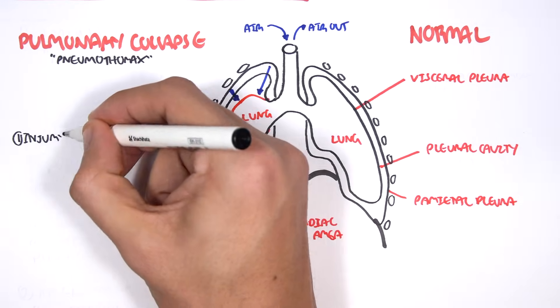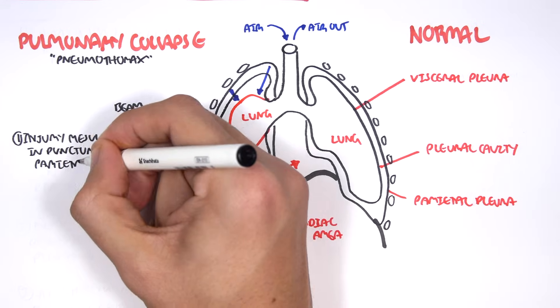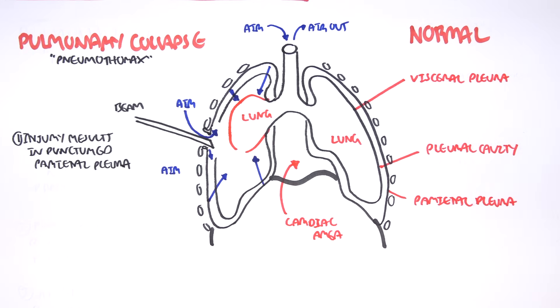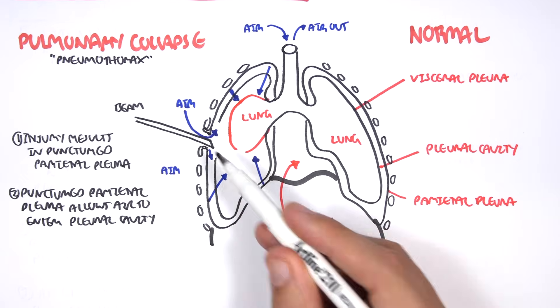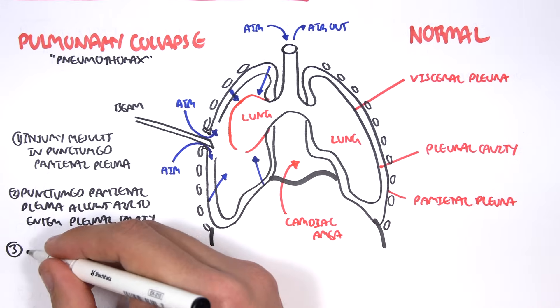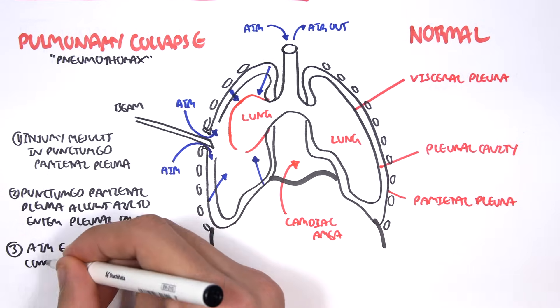So injury results in puncturing of the parietal pleura. The punctured parietal pleura allows air to enter the pleural cavity. Air entering the pleural cavity compresses the lung, resulting in a collapsed lung.